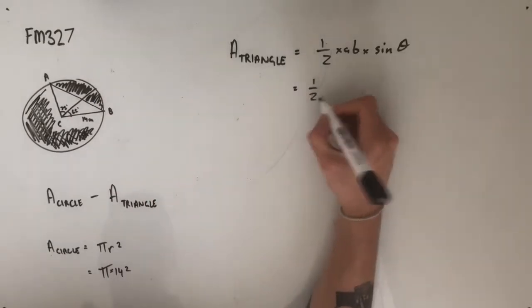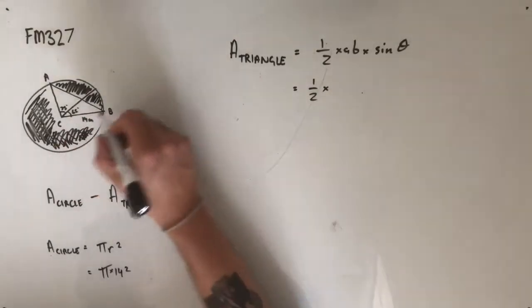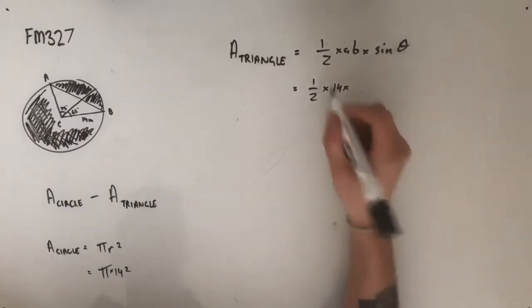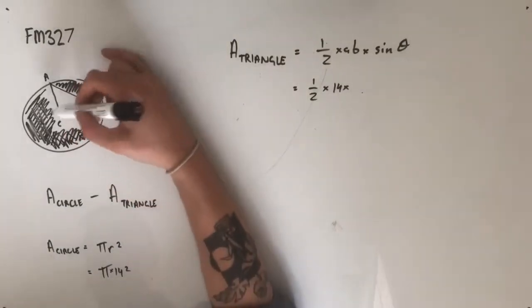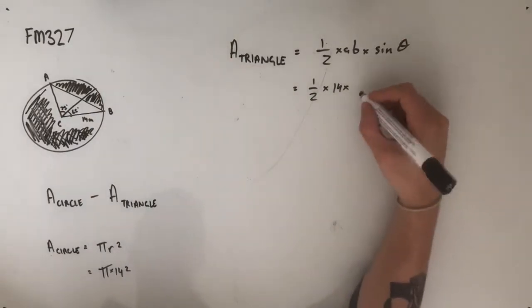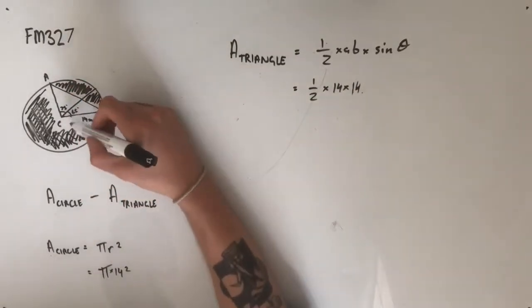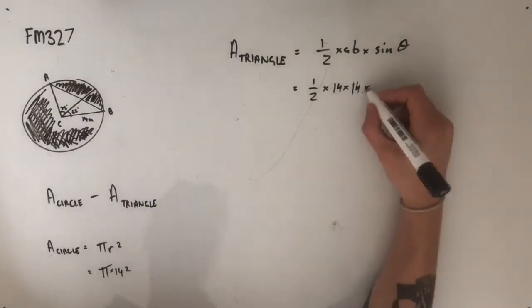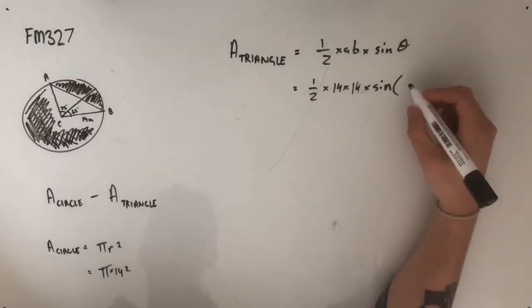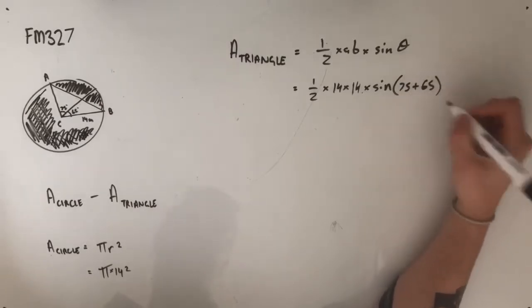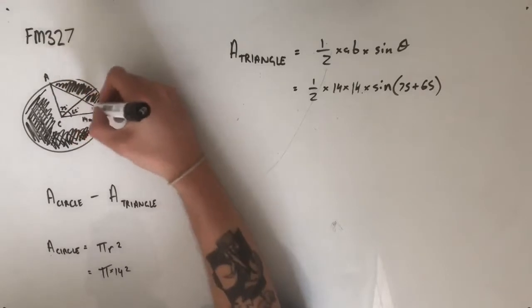So we're going to use half, we're going to treat CB as one of our side lengths, and we're going to use AC as our other side length. So treating these two side lengths and the included angle there, multiply by sine theta, and our theta in this case is going to be our 75 degrees and our 65 degrees added together, treating this as a whole triangle.